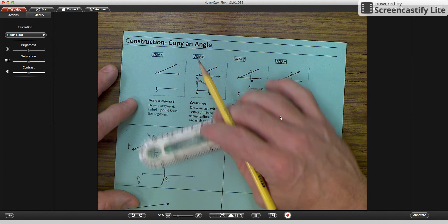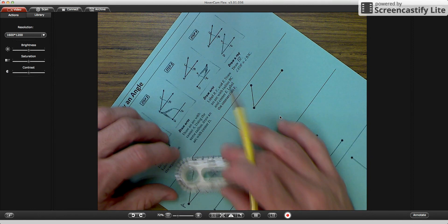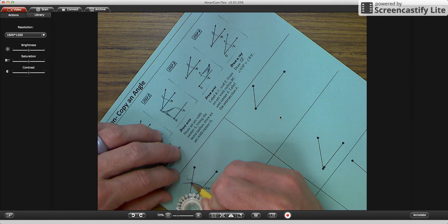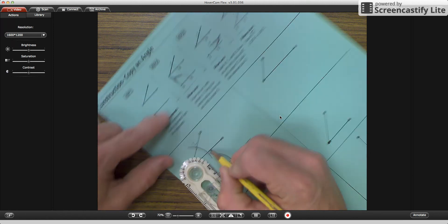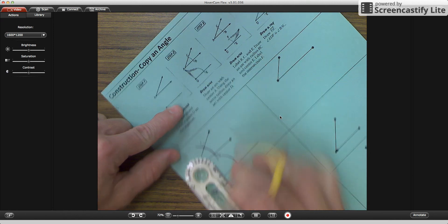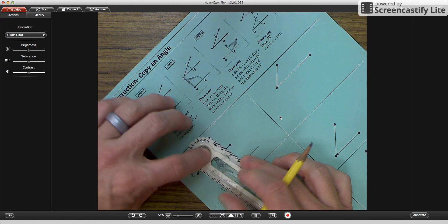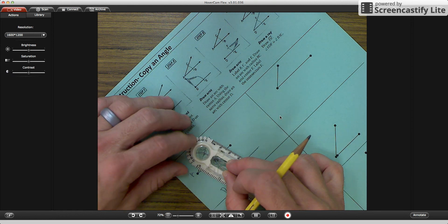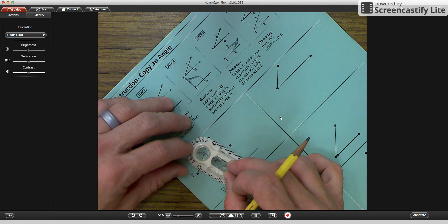So we're going to take our compass, we're going to come up here, and we're going to measure. So I'm going to measure from C to B. My compass, move my slider. It's a little bit shorter than that.